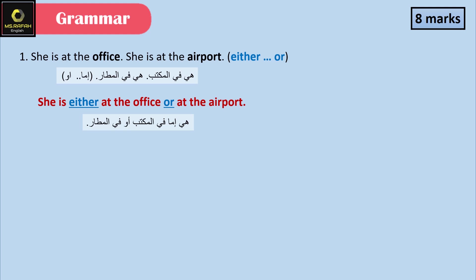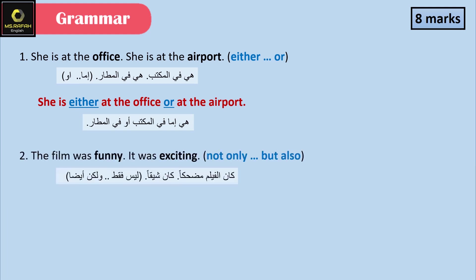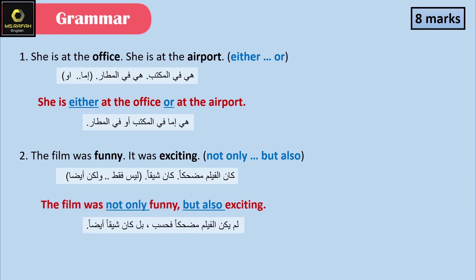'The film was funny. It was exciting.' We're going to use 'not only but also.' Answer: The film was not only funny but also exciting.